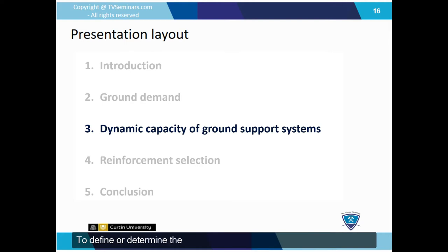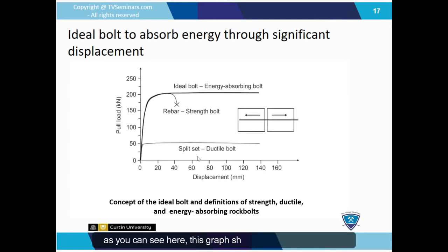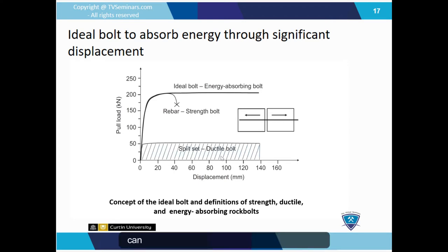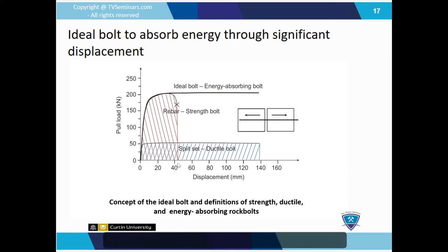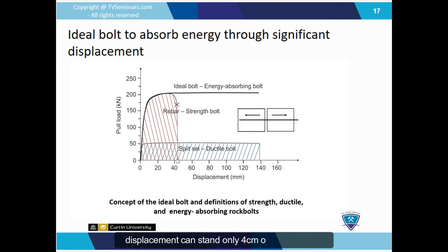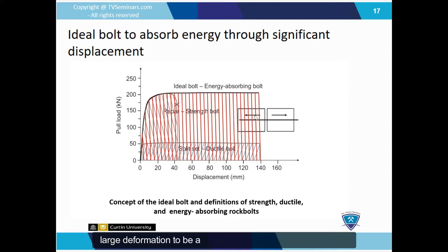To determine the dynamic capacity of the ground support system, this graph shows the load-displacement behavior for different types of rock bolts. Split sets and ductile rock bolts can sustain long displacement, such as 14 cm, but the bearing capacity is low — about 5 tonnes or 50 kN. On the other side, fully grouted rebar has a high load capacity of about 20 tonnes, but can only accommodate 4 cm of displacement. Our ideal rock bolt should be both strong and capable of large deformation to accommodate seismic loads.